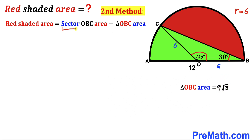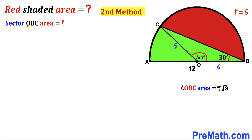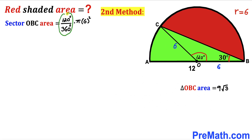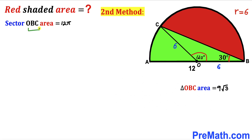To calculate the area of sector OBC, we use the sector formula: A = (θ/360°) × πr². In this case θ = 120° and r = 6. So the area of sector OBC = (120/360) × π × 6² = (1/3) × 36π = 12π square units.